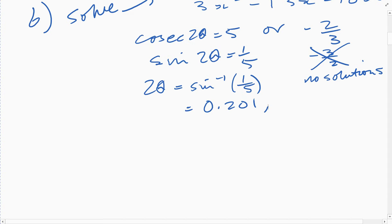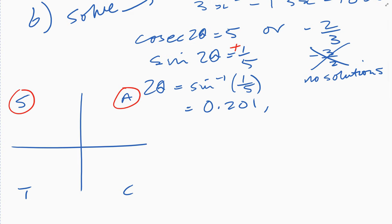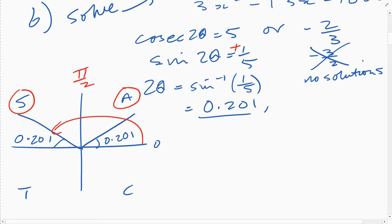You want to use the cast diagram now, or however you solve these. I like to do it like this. Sine is positive, so we're going to use this one and this one. This is zero, we're going to go to 0.201 here, reflect it over here 0.201, and that angle there - because we're in radians, that's pi over 2, this is pi - so if we do pi minus 0.201 we'll get that angle up there which is 2.94 something.